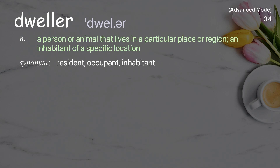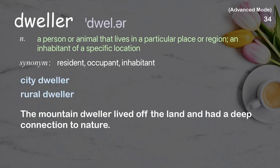Dweller: A person or animal that lives in a particular place or region, an inhabitant of a specific location. Examples: City dweller. Rural dweller. The mountain dweller lived off the land and had a deep connection to nature.